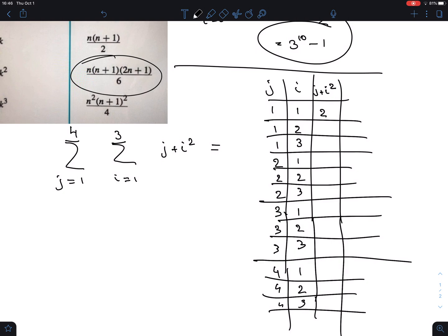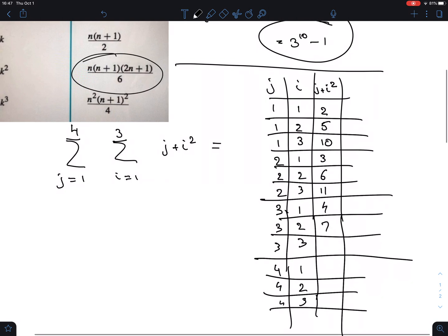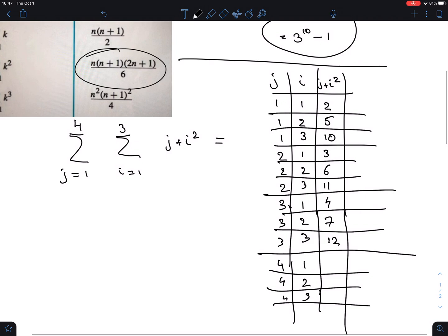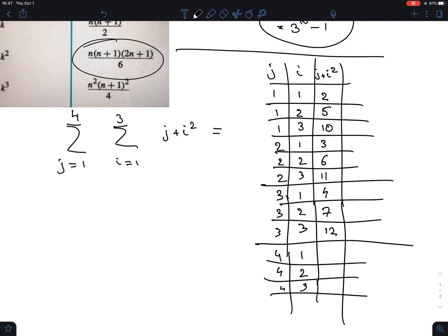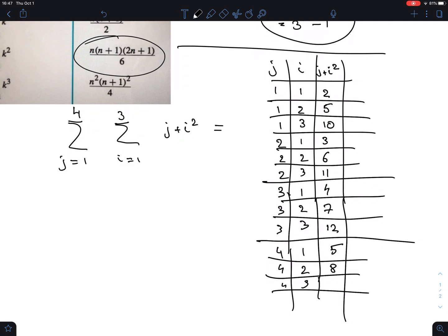The first one is 1 plus 1 squared, that is 2. 1 plus 4 is 5. 1 plus 9 is 10. Now I start taking j=2: 2 plus 1 squared is 3, 2 plus 2 squared is 4, 2 plus 4 is 6, 2 plus 9 is 11. Now I get 3 plus 1, that is 4. 3 plus 2 squared, that is 3 plus 4, that's 7. Then 3 plus 9, that's 12. If you find it hard to do this in your head, you could make a separate column for i squared.